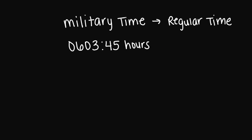So now let's try going from military time to regular time. Let's look at this example — we have 0603:45 hours. So if I convert this to regular time, this is going to be 6:03:45 a.m. The reason why this is a.m. is because I have a 0 right here in front of my hour number. When you have a 0 in front of the hour number, that means a.m.